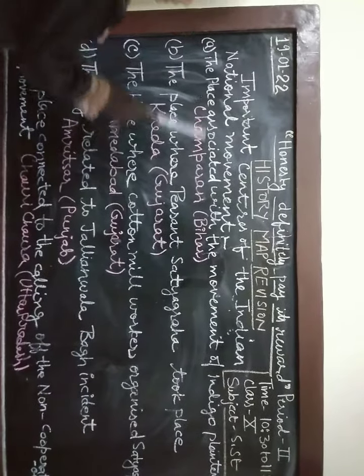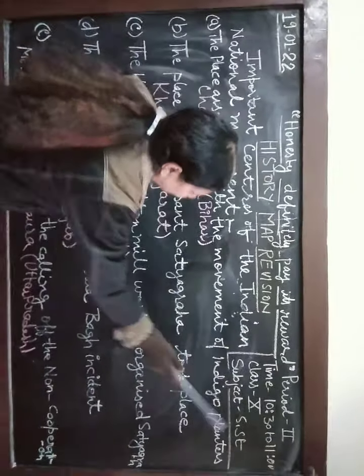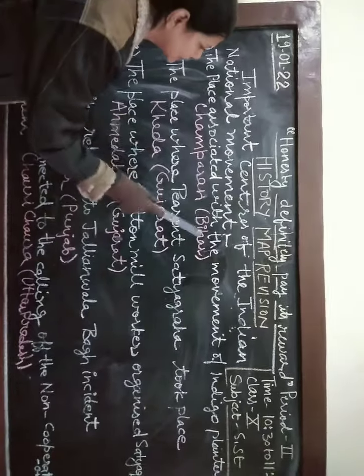Question 1: The place associated with the movement of indigo planters is Champaran, and Champaran is in Bihar, the state of Bihar.